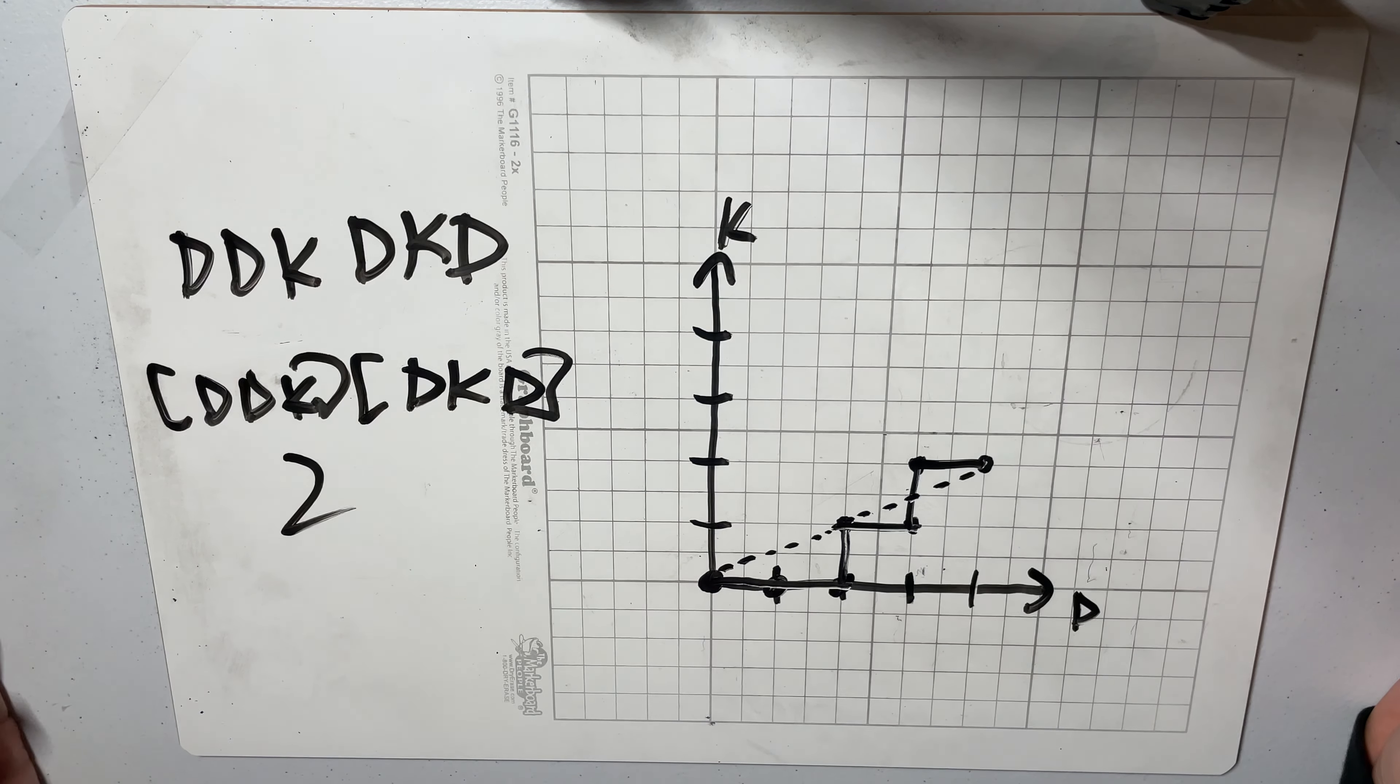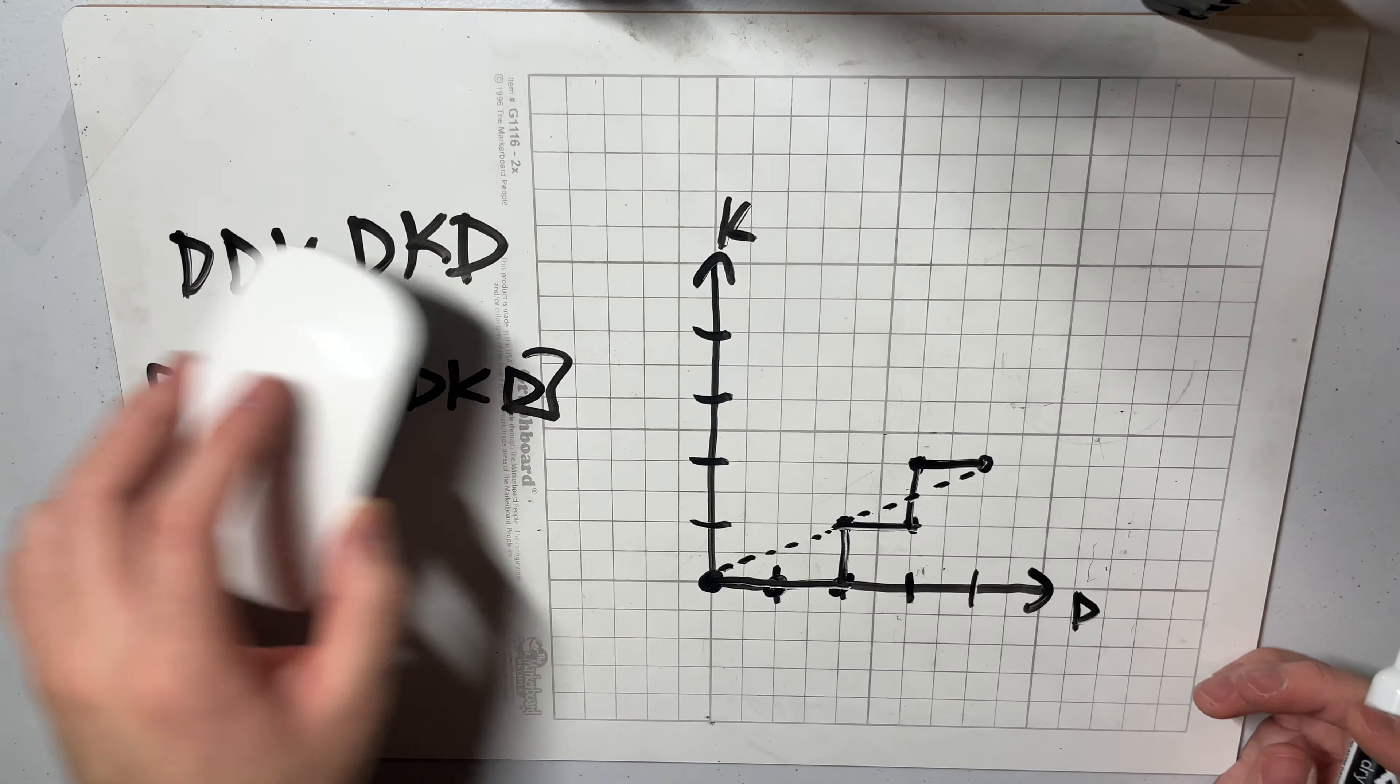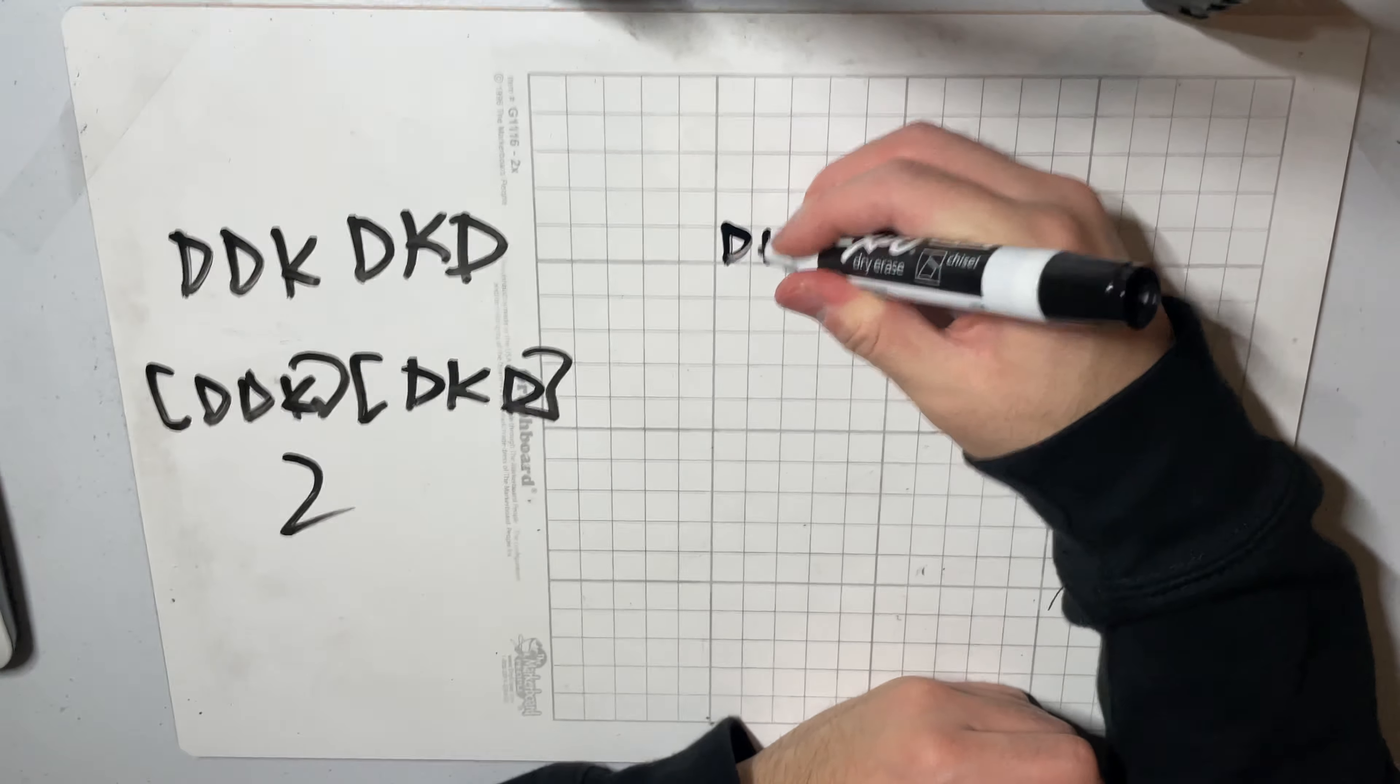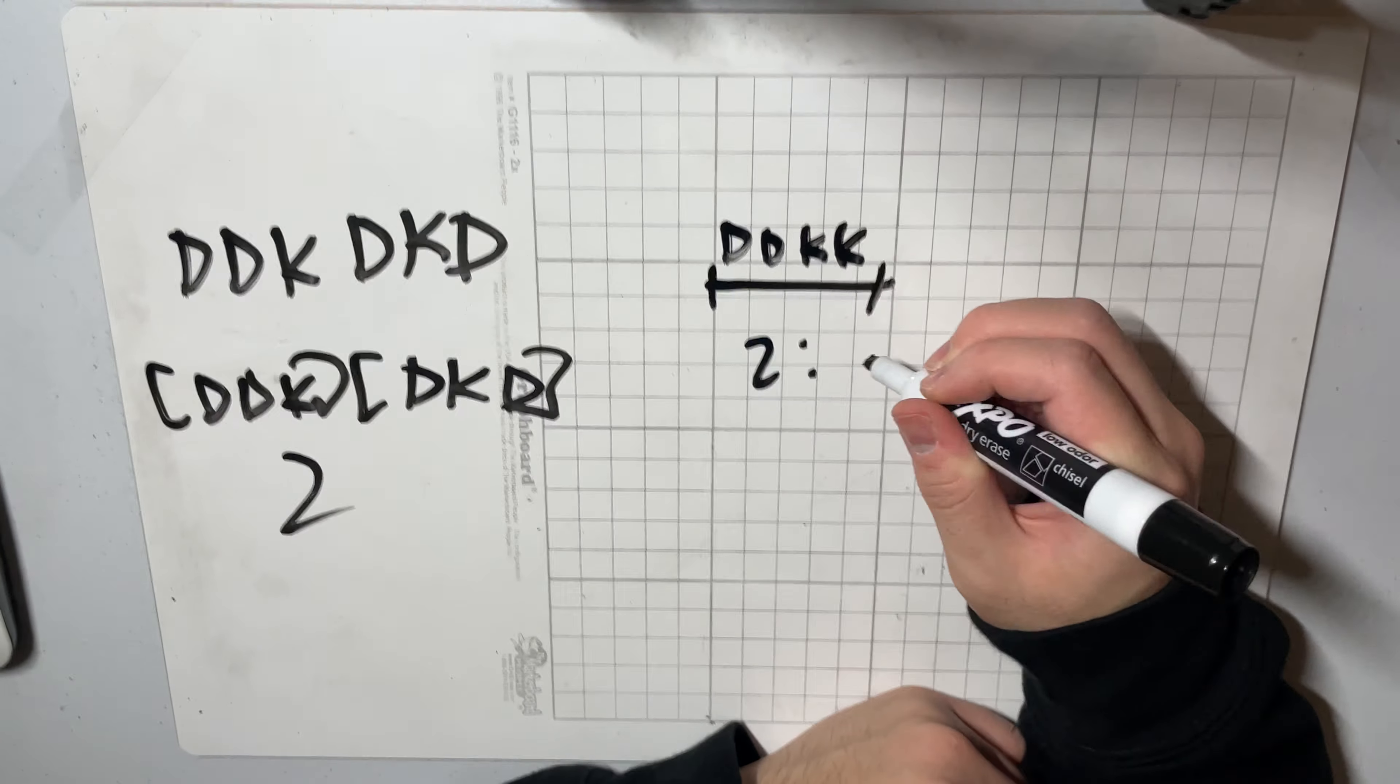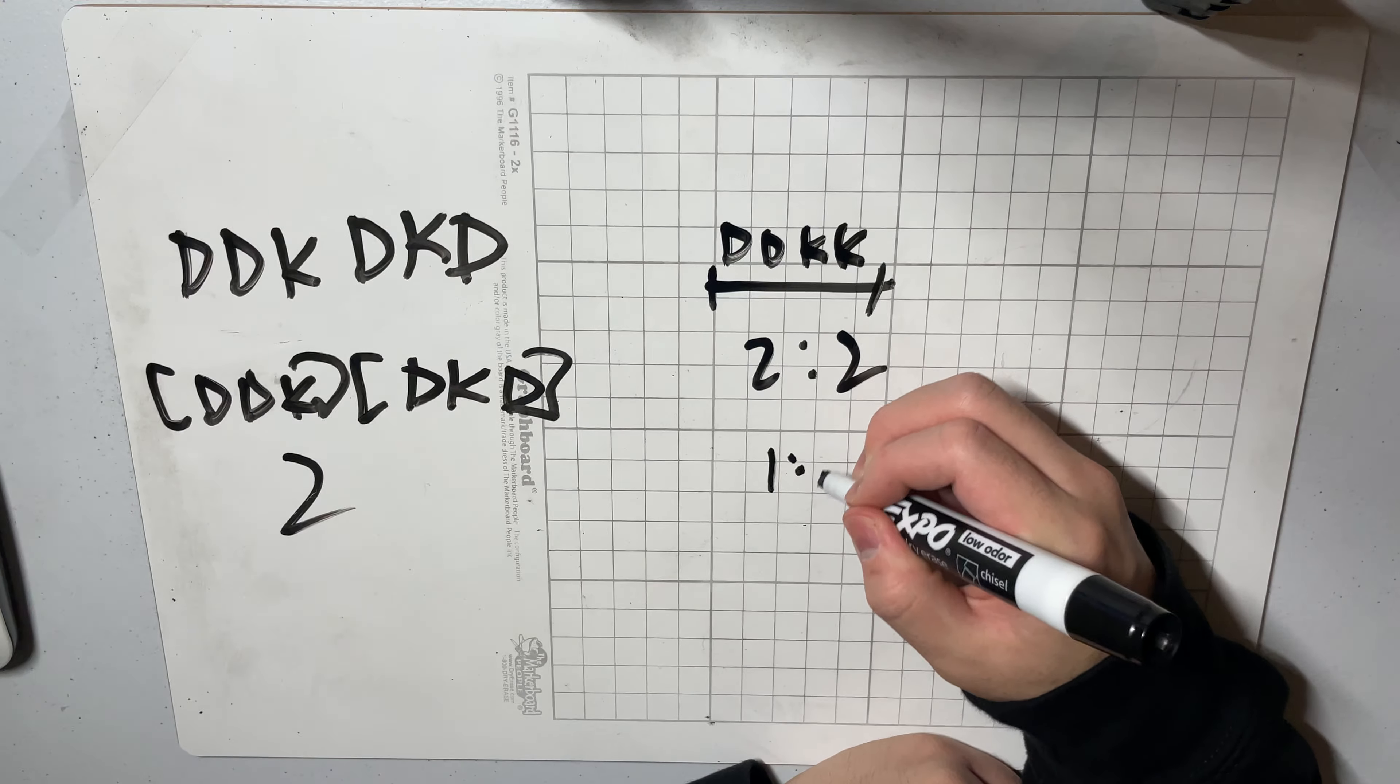So what this means is that we only care about the reduced form of the ratio of every prefix of the string. So what I mean by that is if we for example had a block like DDKK then this chunk over here would have a ratio of two to two. But we can think of this as just having a ratio of one to one.